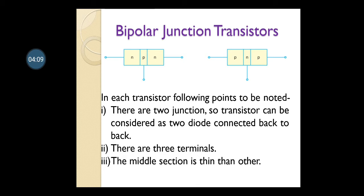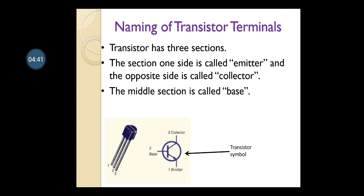In the NPN transistor, the first layer is N-type, then P-type, then again N-type, and the two lines between N-P and P-N are the junctions, meaning a depletion layer is formed. There are three terminals: one terminal from the first N-type semiconductor, another from the second N-type semiconductor, and the third from the P-type semiconductor. In a PNP transistor also, three terminals are there and the middle section is thinner than the others.